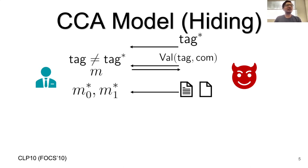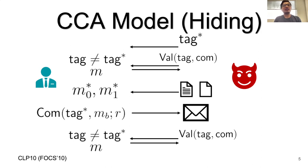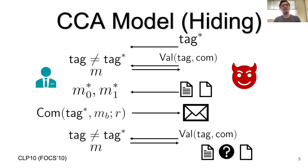The adversary outputs two messages M0 and M1, the challenger samples a bit b and commits to M_b on the challenge tag tag*, and sends it to the adversary. The adversary again gets access to the val oracle and tries to guess whether the message is M0 or M1. For those familiar with traditional non-malleability notions, this notion in the non-interactive setting has been shown equivalent to non-malleability with respect to commitment — it is the strongest model considered in the non-malleability literature.